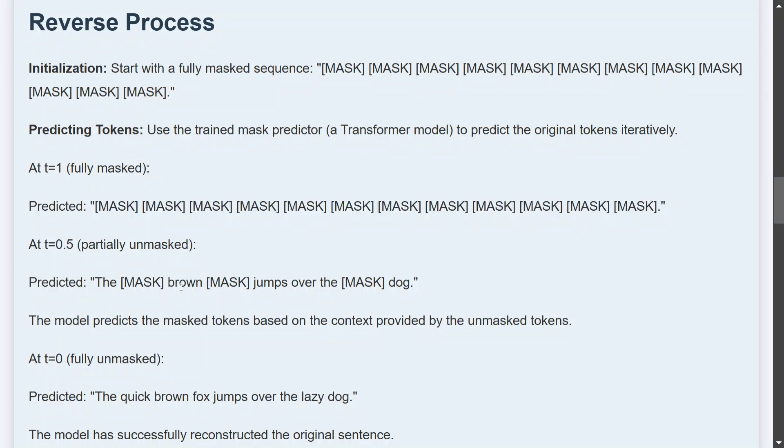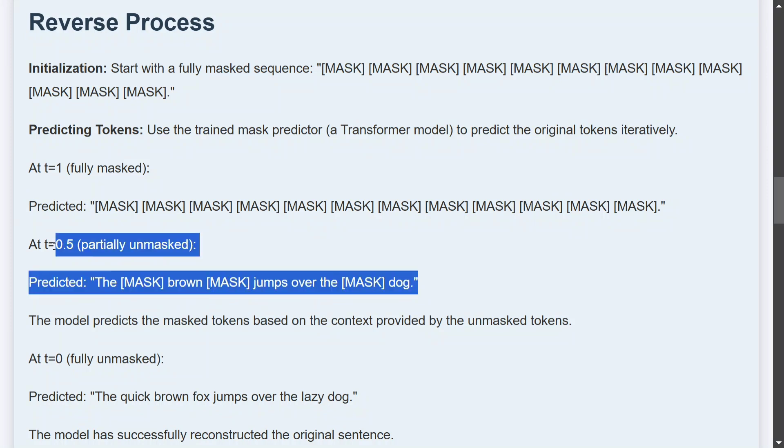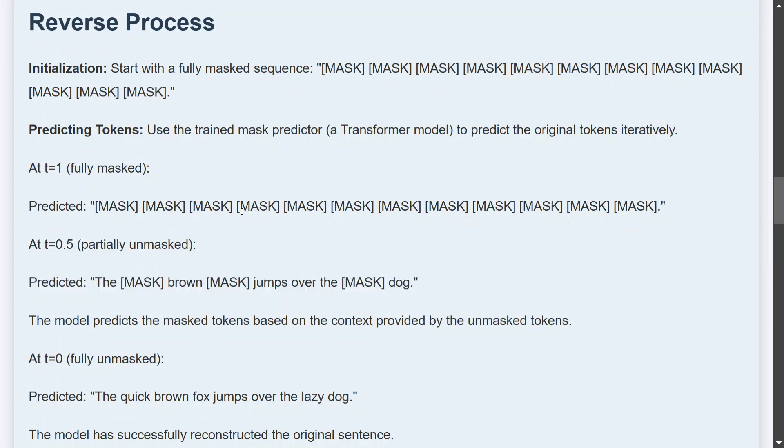One thing important that you might have observed is that it is not using the previous tokens to generate the next token. It is predicting the tokens randomly. This is the most important part. In case of the usual transformer architecture, you are predicting tokens one after the other, using the previous tokens to predict the next one.